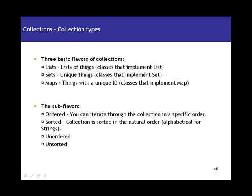We have three basic flavors of collections: Lists, Sets, and Maps. Lists are simply a list of things — for example, a list of student objects with student name, role number, and other attributes. Sets are lists of unique things. If you're storing IDs and each ID must be unique, you go for a Set where no duplicates are allowed.